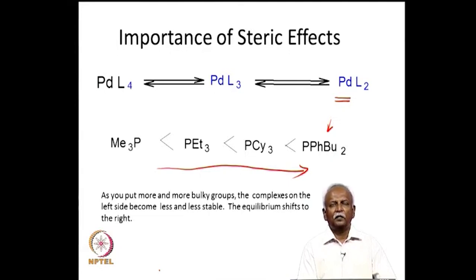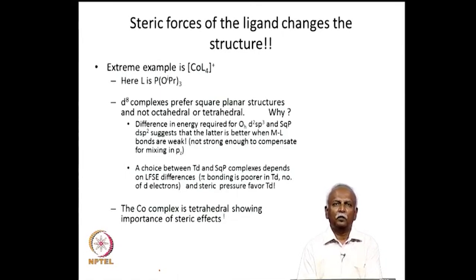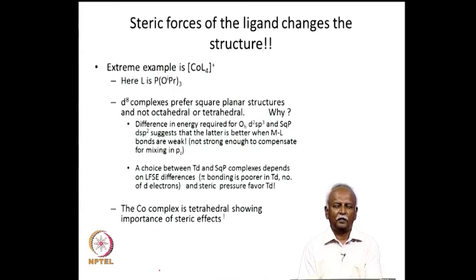This becomes very critical in the case of an extreme example — a cobalt complex where the phosphorus has four isopropoxy groups. The bulk of the isopropoxy groups is so large that cobalt, which would prefer square planar geometry, tends to be tetrahedral instead.